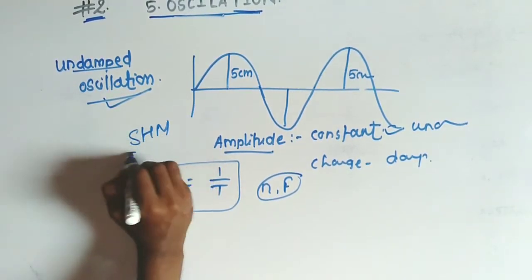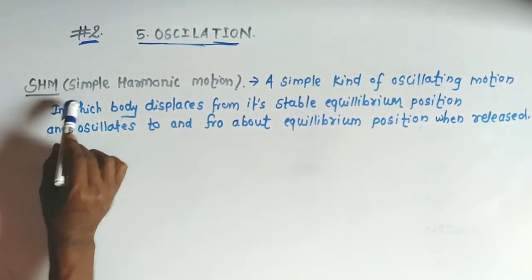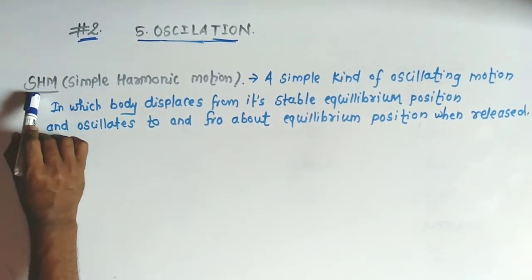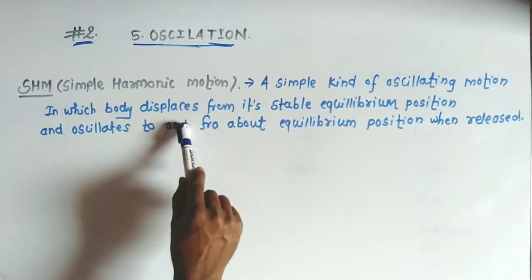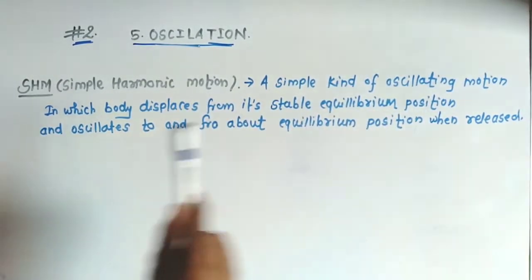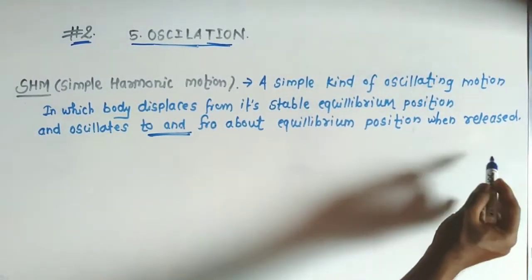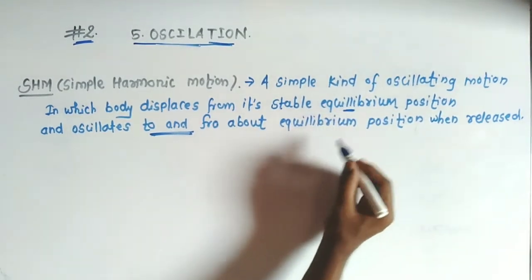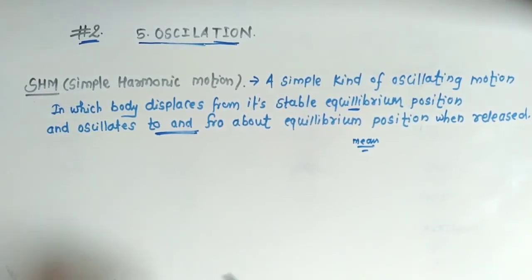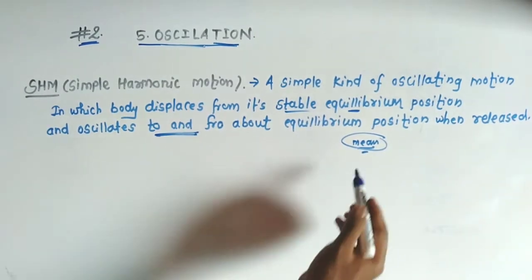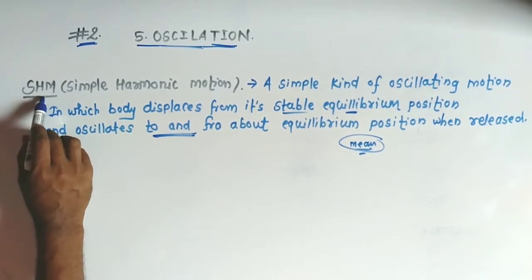Now we have to study the simple harmonic motion part. In simple harmonic motion, the body displaces from its stable equilibrium position and oscillates to and fro about the equilibrium position when it is released. The stable equilibrium position is nothing but the mean position. This is the simple definition of SHM — simple harmonic motion.